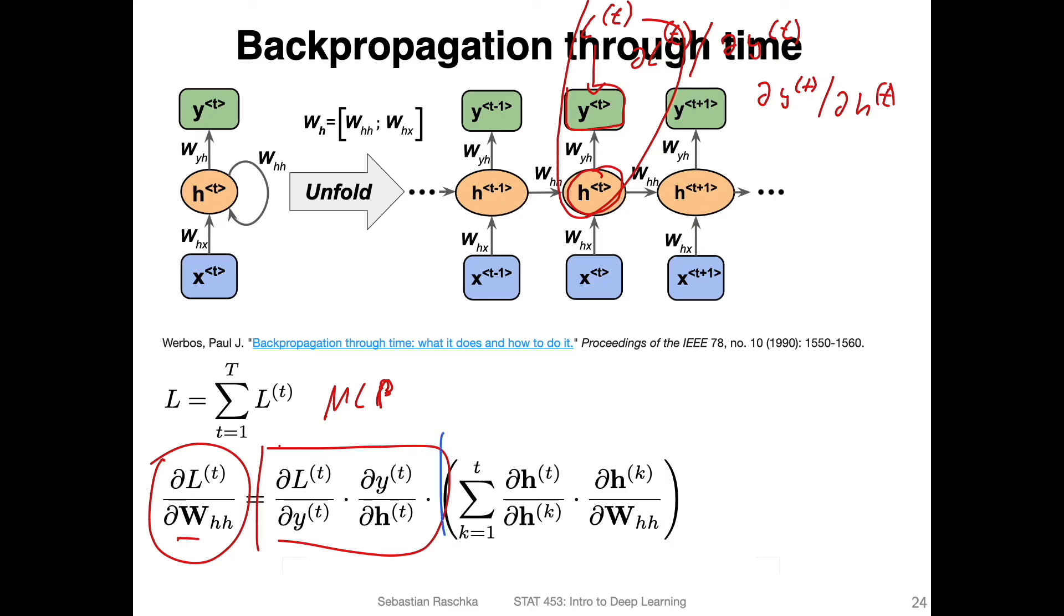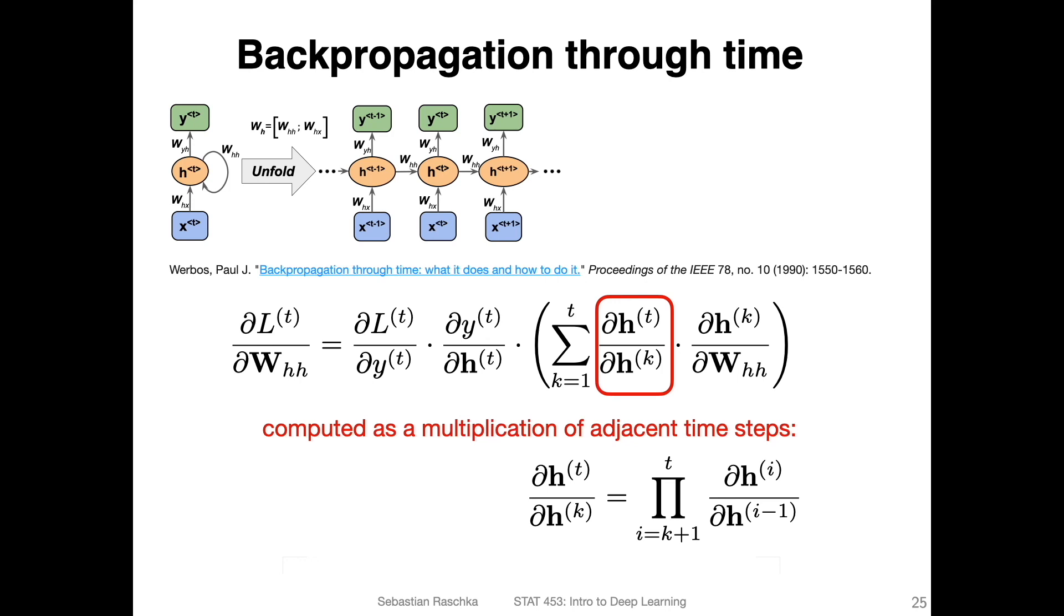But then on top of that, we have this term here, which is essentially the through-time step, where we have time steps from k=1 to t, so from up to the very beginning. So we have partial derivative or gradient of h_t with respect to the one in the very beginning, so summing them up. And those themselves, we won't go into too much detail here, but those themselves are a product here.